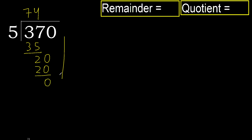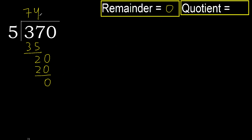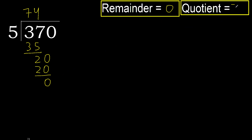Next — there is no more number, therefore finish. Remainder 0. 370 divided by 5 is complete. Ok.